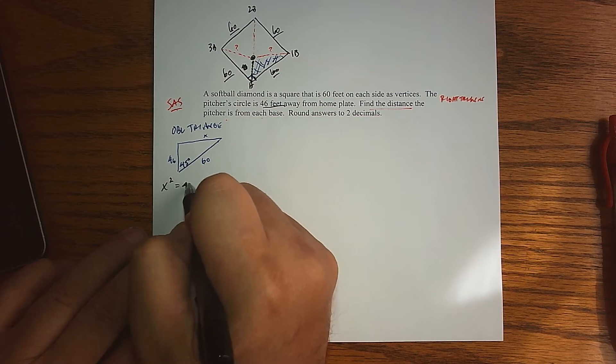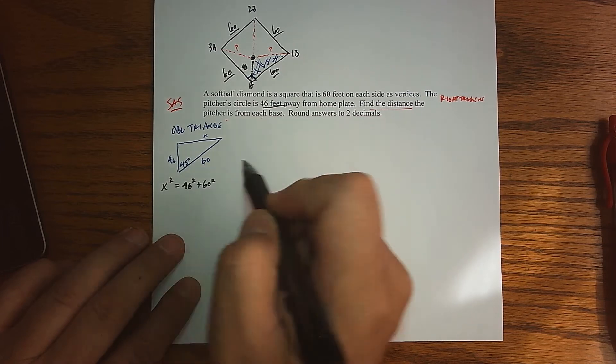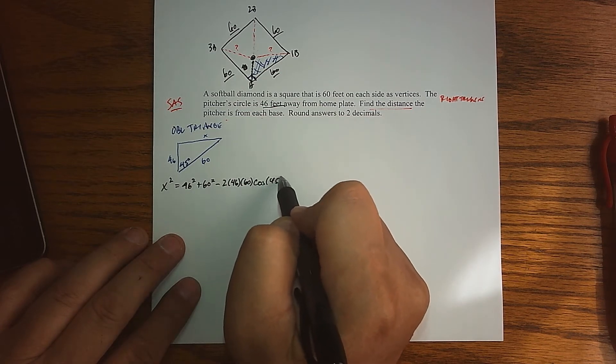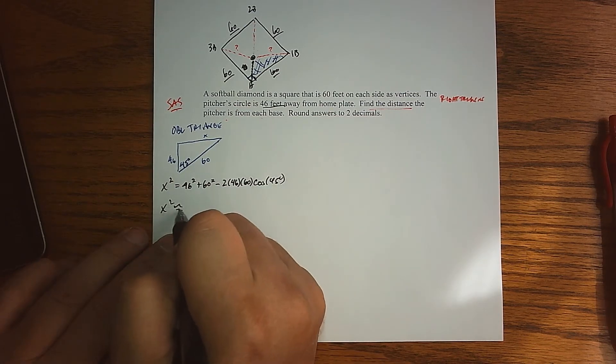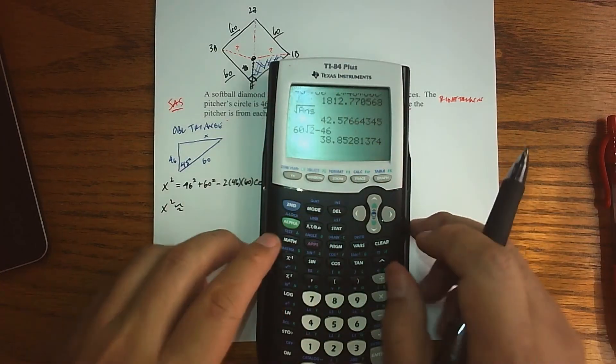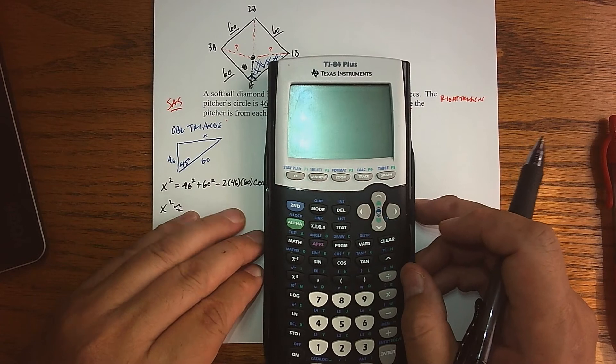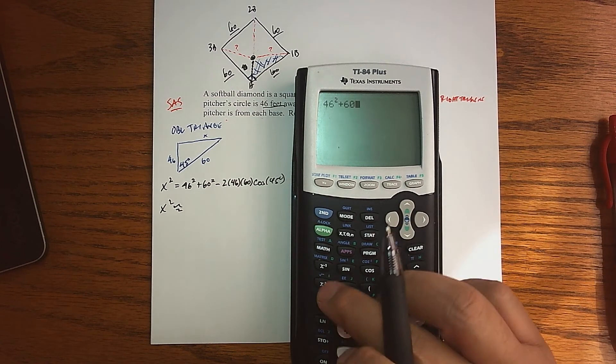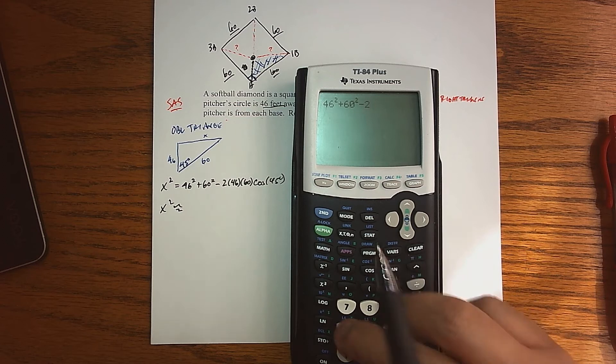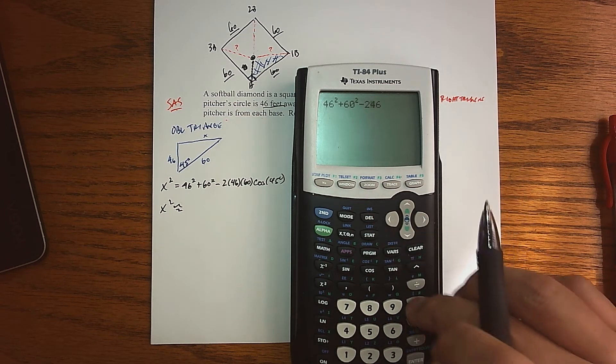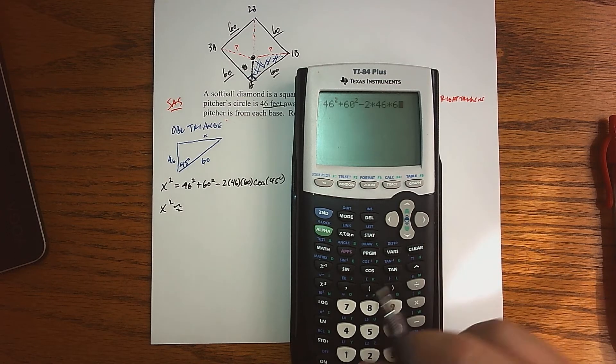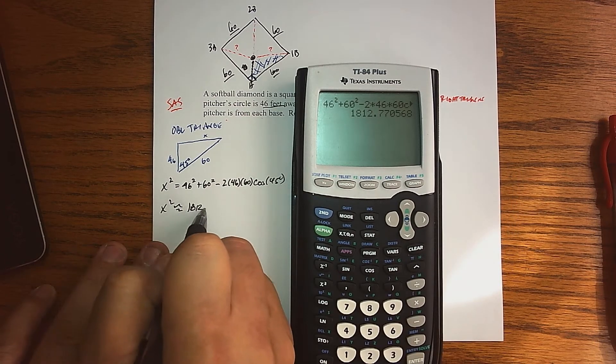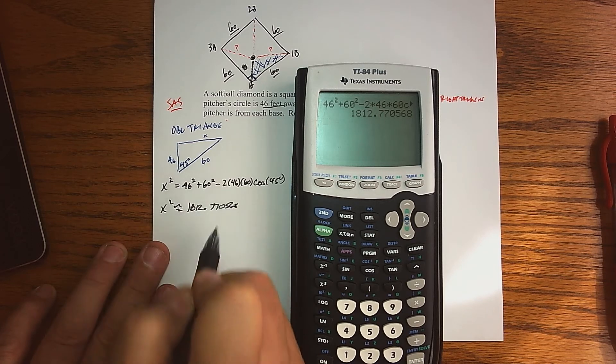To find x using our Law of Cosines, well, x squared would be equal to 46 squared plus 60 squared minus 2 times 46 times 60 times the cosine of 45 degrees. So there is what x squared is. I'll reach over to my calculator and just put all that stuff in there. So I got 46 squared, and then plus 60 squared, minus 2 times 46 times 60, and then times the cosine of 45.